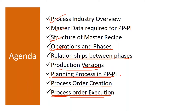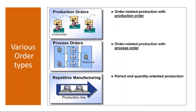So those are the topics we'll be covering in process manufacturing. We have different manufacturing industries — previously we covered discrete manufacturing, where we used production orders, order-related production. Discrete manufacturing is like an assembly process.